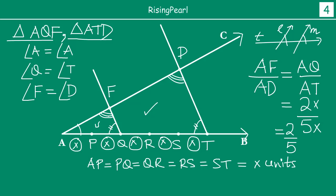So friends, this is in a nutshell what is meant by the basic proportionality theorem, or Thales theorem. To wrap it up: if you have two equiangular triangles, then the corresponding sides will always be in the same ratio.